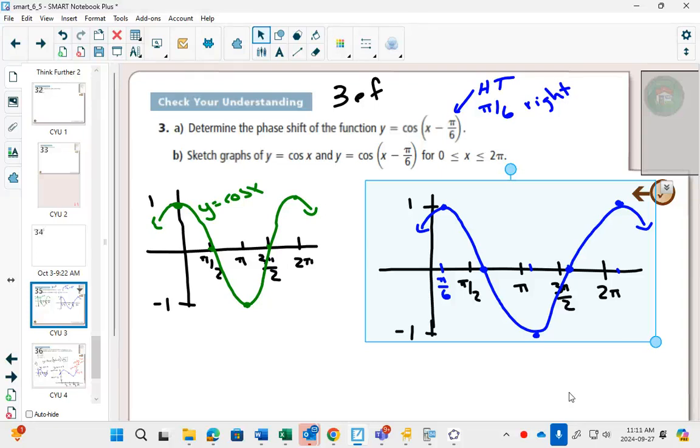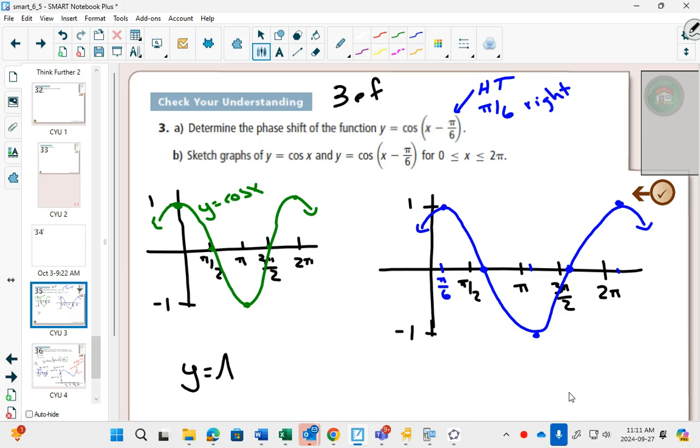Here's example three. Now we're looking at the C value. What happens when we have a shift? How do we do it? What's the shortcut?